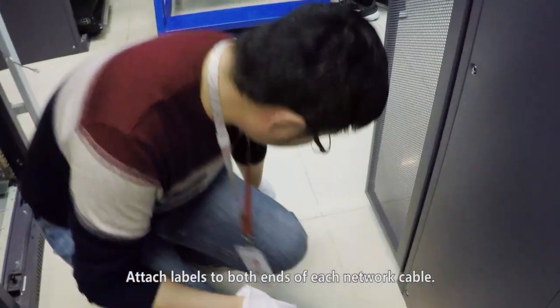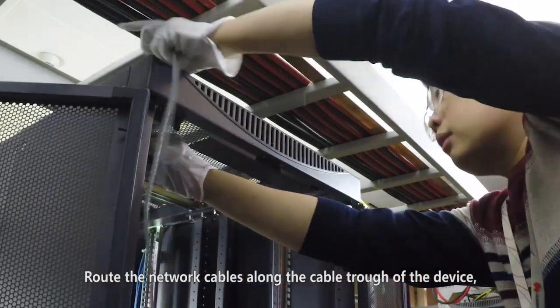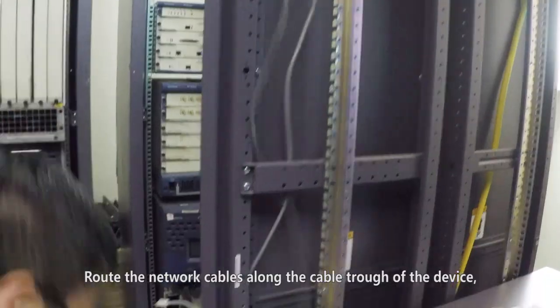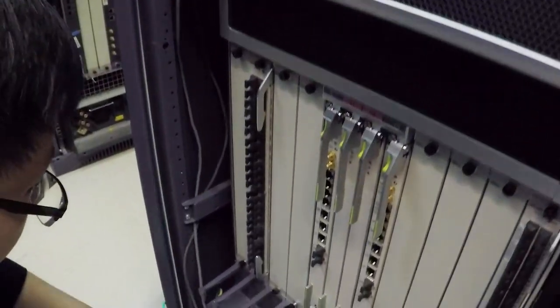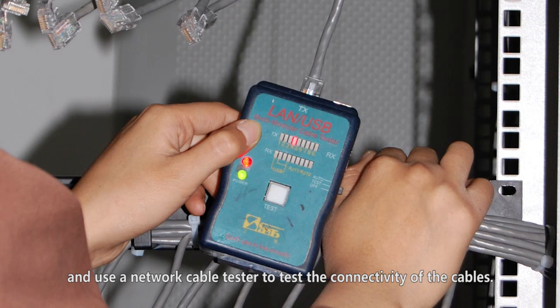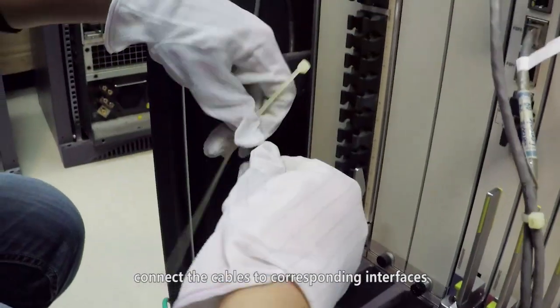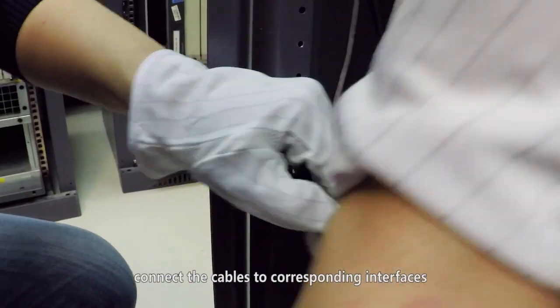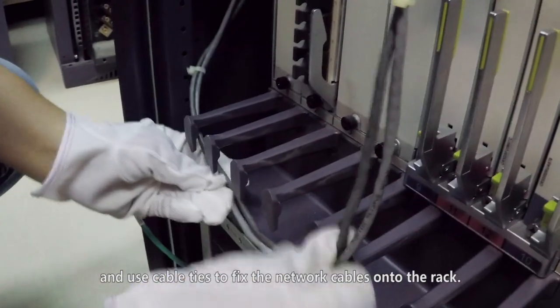Installing network cables. Attach labels to both ends of each network cable. Route the network cables along the cable trough of the device. And use a network cable tester to test the connectivity of the cables. After the test is complete, connect the cables to corresponding interfaces and use cable ties to fix the network cables onto the rack.